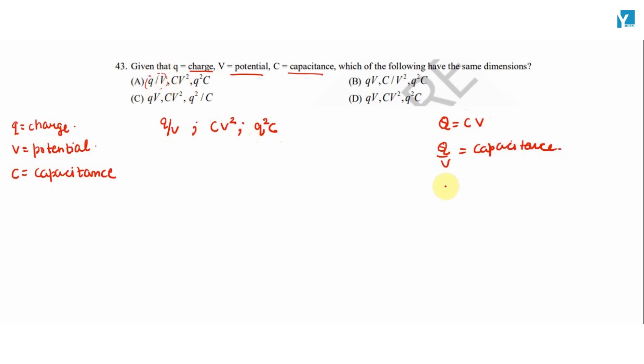And we know that energy stored in a capacitor is equal to half CV square hoti hai, or half QV hoti hai, or half Q square by C hoti hai. These three expressions hoti hai energy stored in a capacitor ki hai.